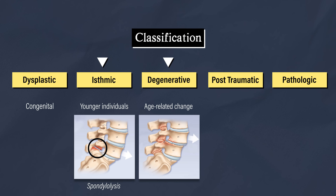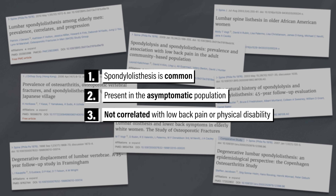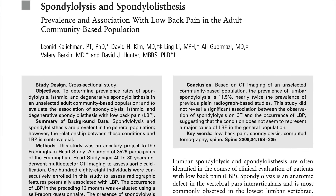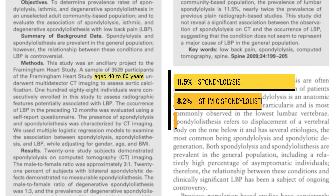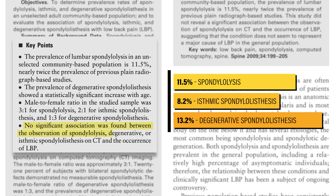Isthmic and degenerative spondylolisthesis are the focus of this video. If spondylolisthesis is related to structural changes of the spine, how can exercises help? Why not just jump straight into surgery? Well, research suggests that spondylolisthesis is common, present in the asymptomatic population, and is not correlated with low back pain or physical disability. For example, Kalichman in 2009 found that 11.5% of participants had spondylolisthesis, 8.2% had isthmic, and 13.6% had degenerative spondylolisthesis, and no significant association was identified between spondylolisthesis and the occurrence of low back pain.